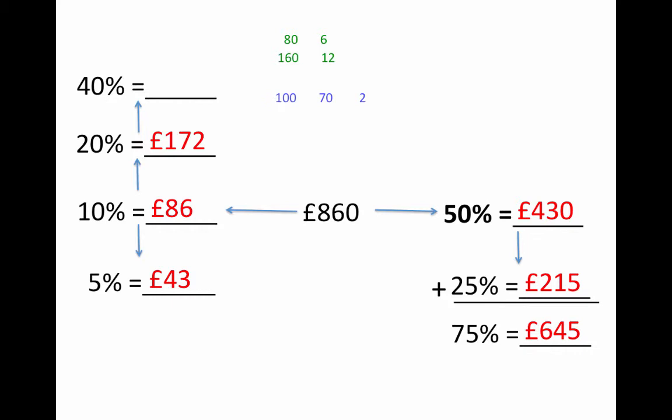For 40%, again, if I partition the 172 into its components of the hundreds, tens, and units, I'd get 200, 140, and 4. Put them back together to make £344. And then similarly, to find 80%, I could partition to get £688.